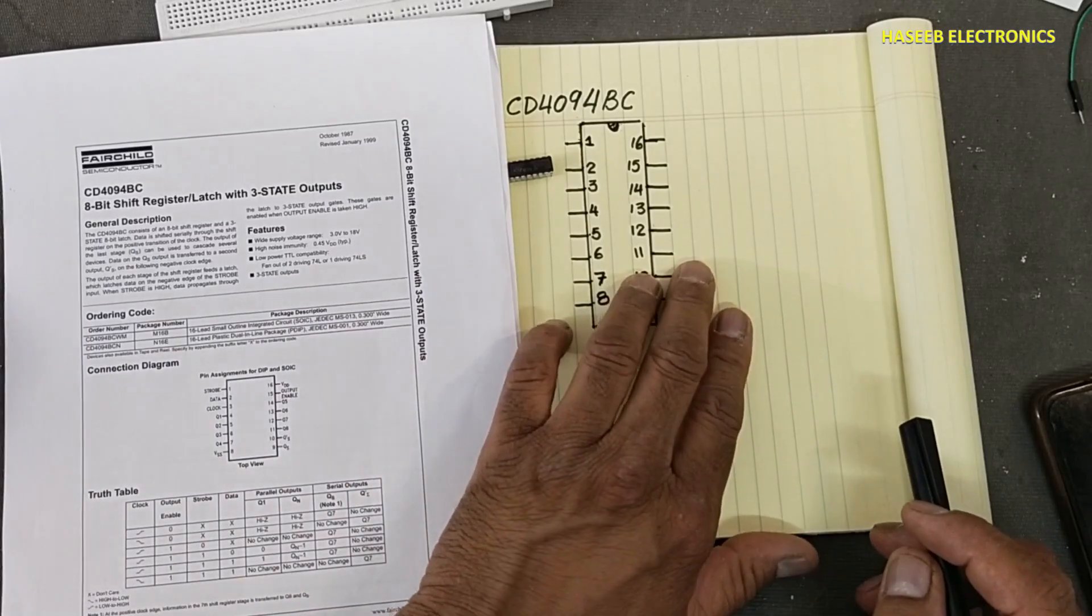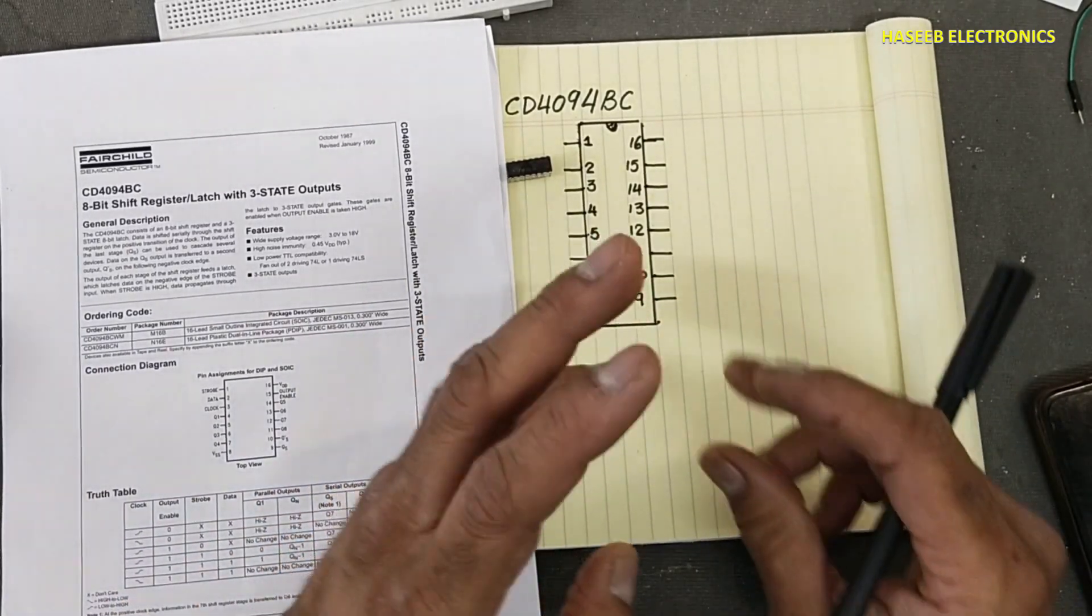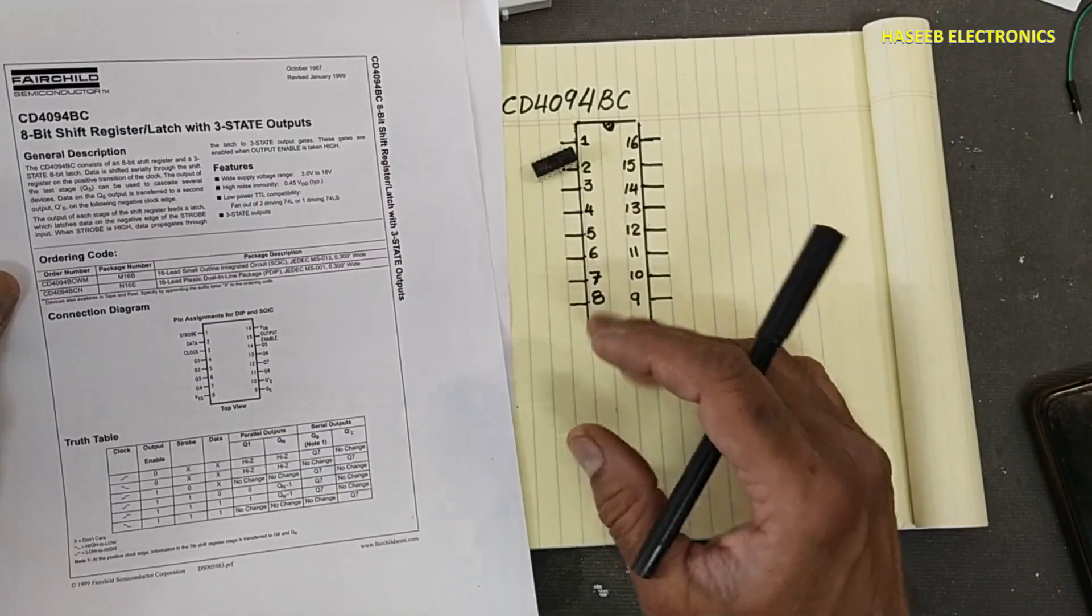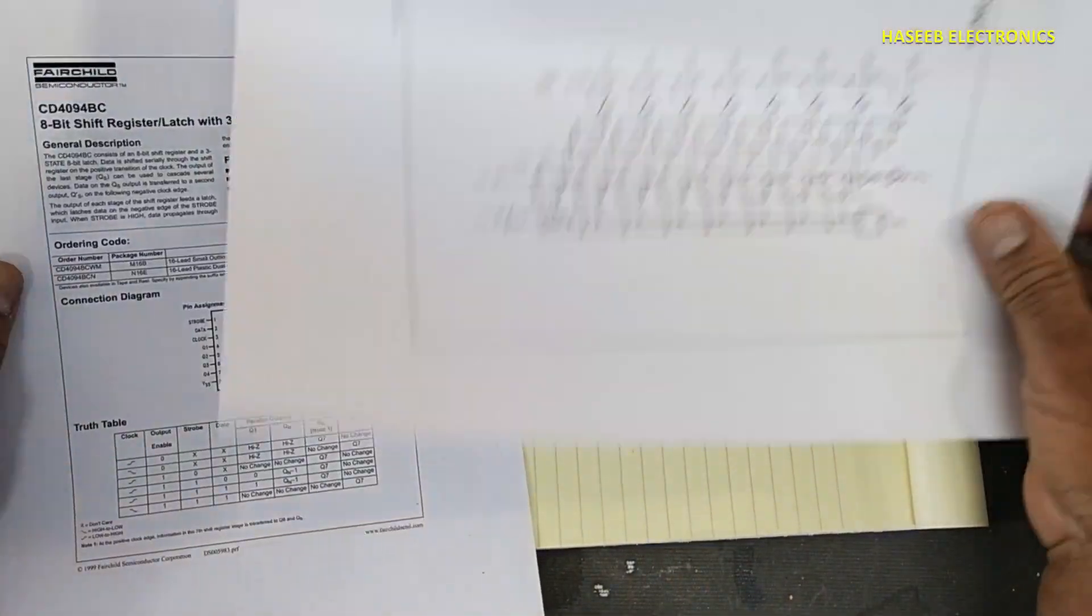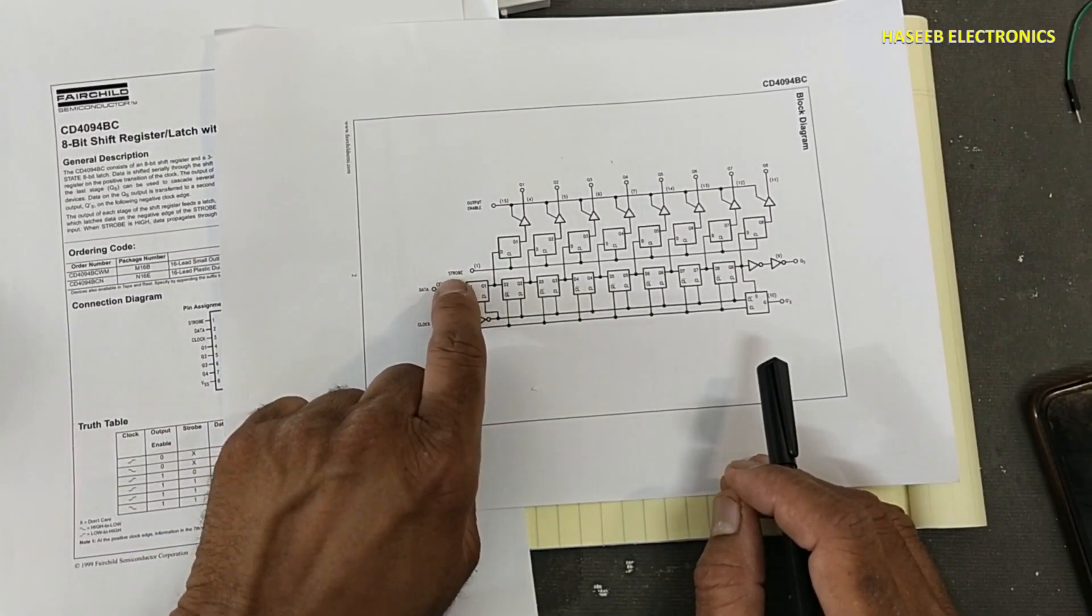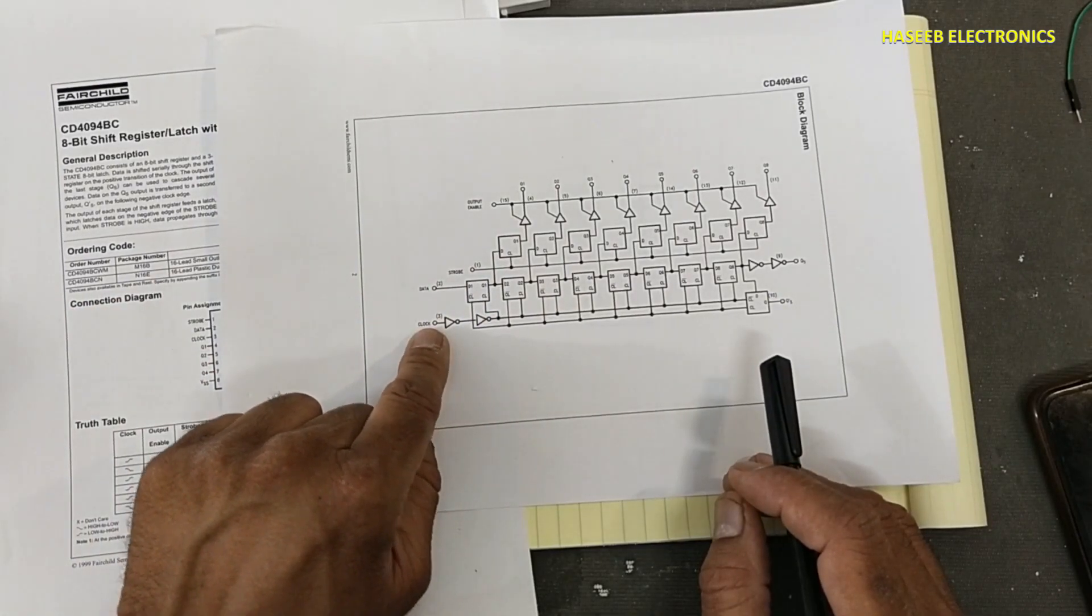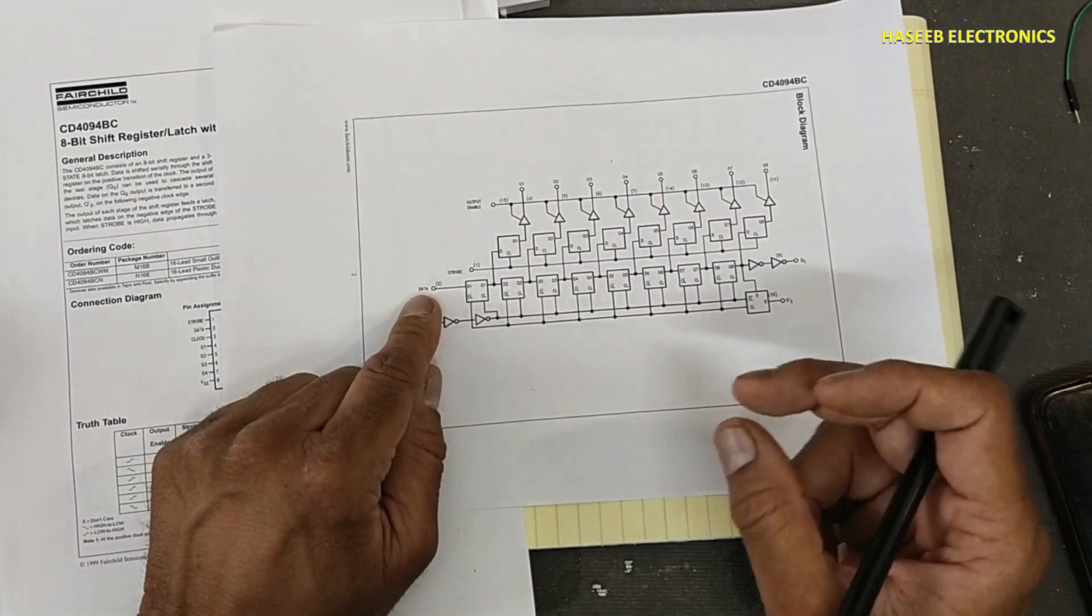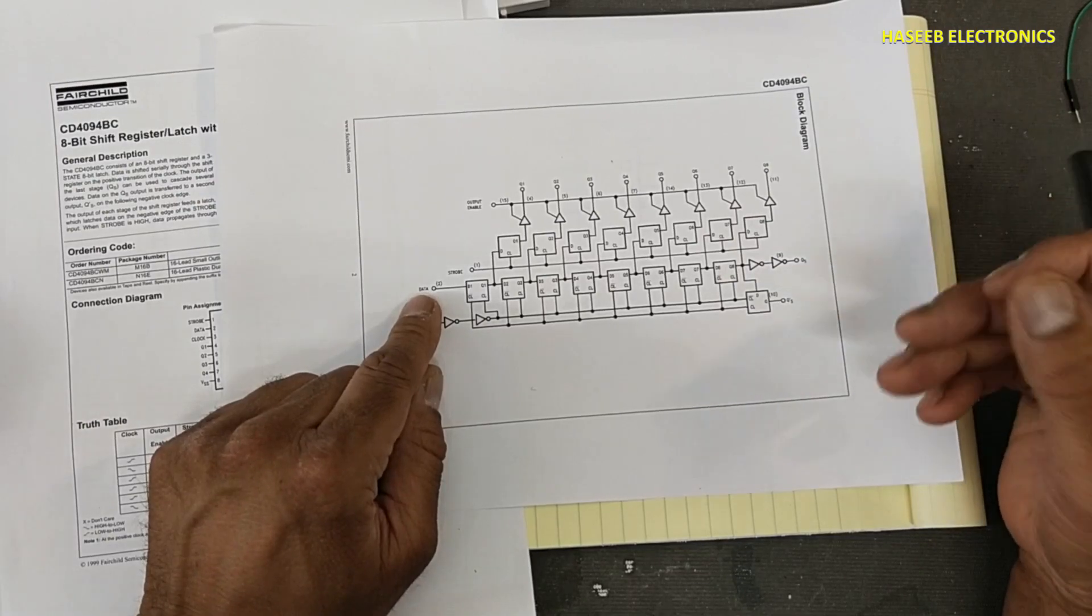Its output is tri-state type: low, high, and high impedance. It receives clock signal and data input. Then it has control pins, strobe and output enable. When we apply clock pulse and inject some data at the data pin, the data is logic level, either low or high.